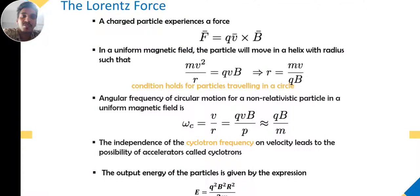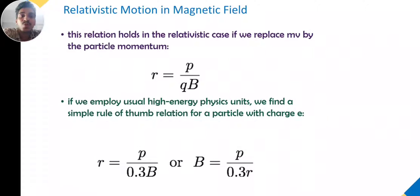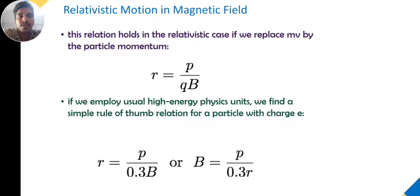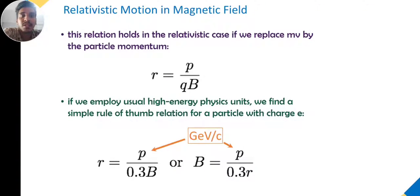The output energy of the particle is given by the expression E = q²B²r²/(2m). For relativistic motion in a magnetic field, replacing mv with particle momentum p gives r = p/(qB). In high-energy physics units, for a particle with charge e, a simple rule relates p in GeV/c, where B should be in tesla.